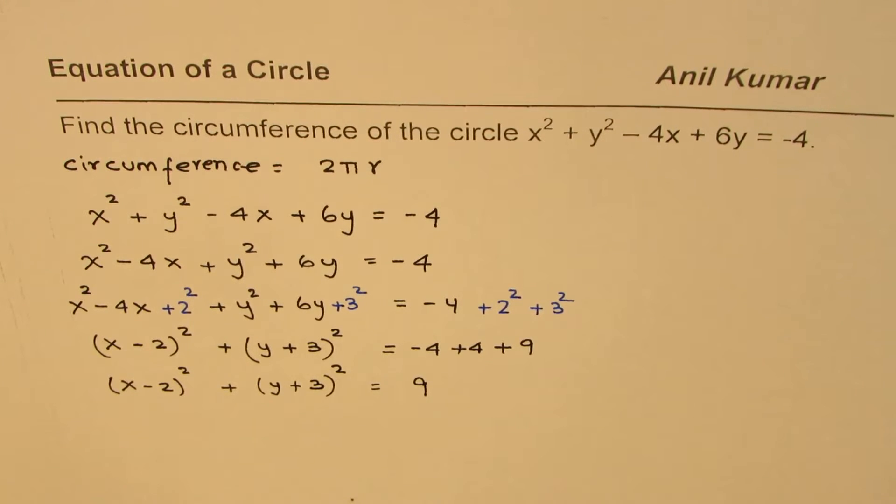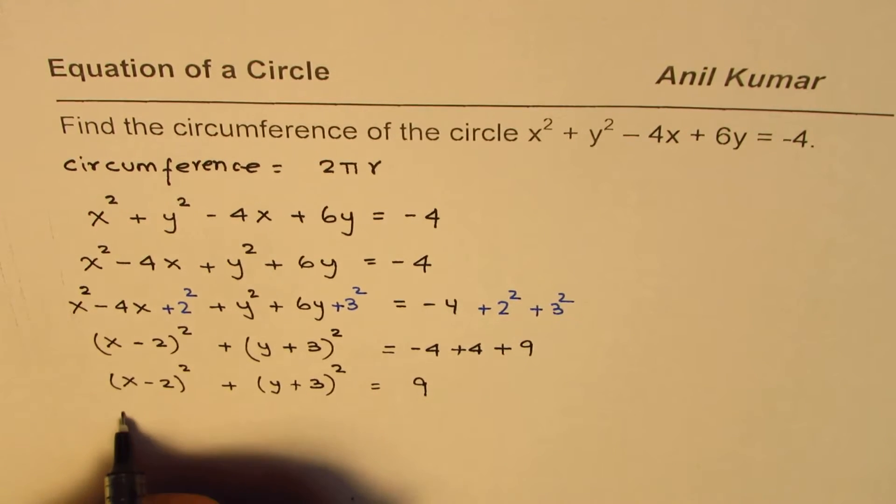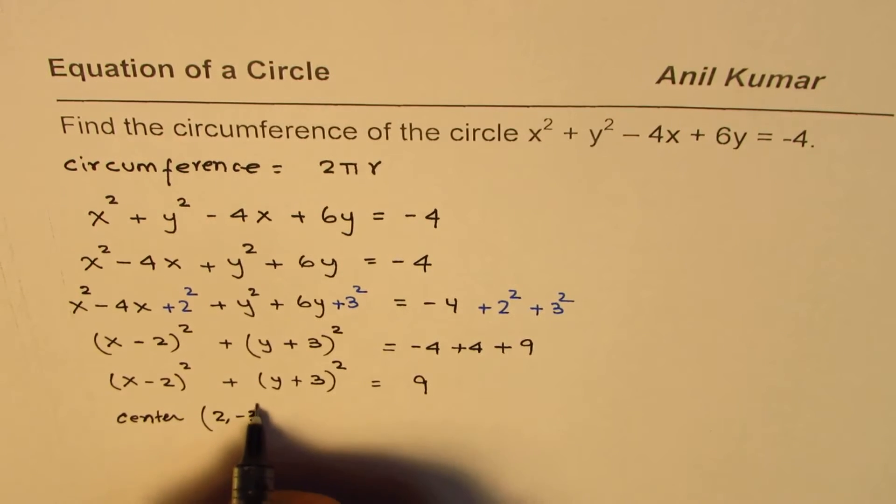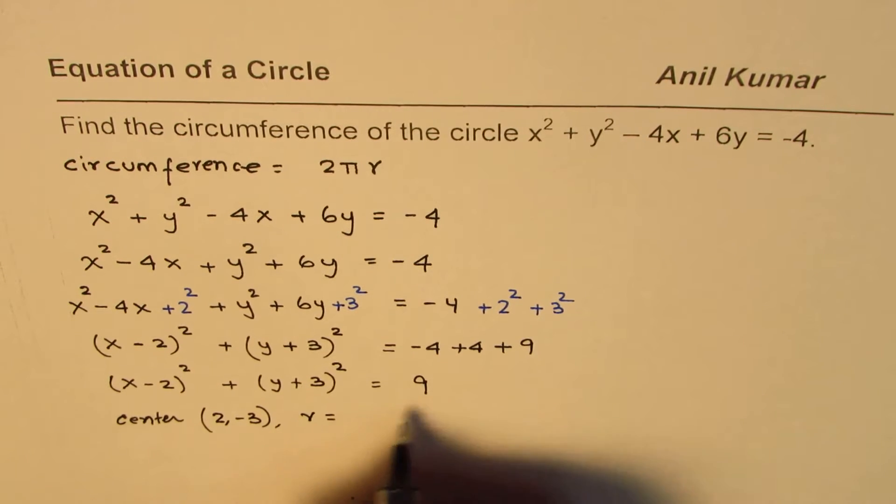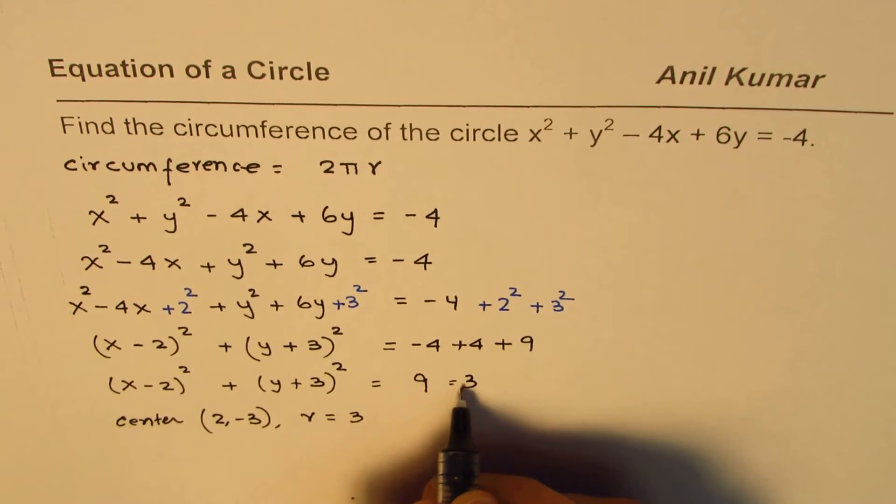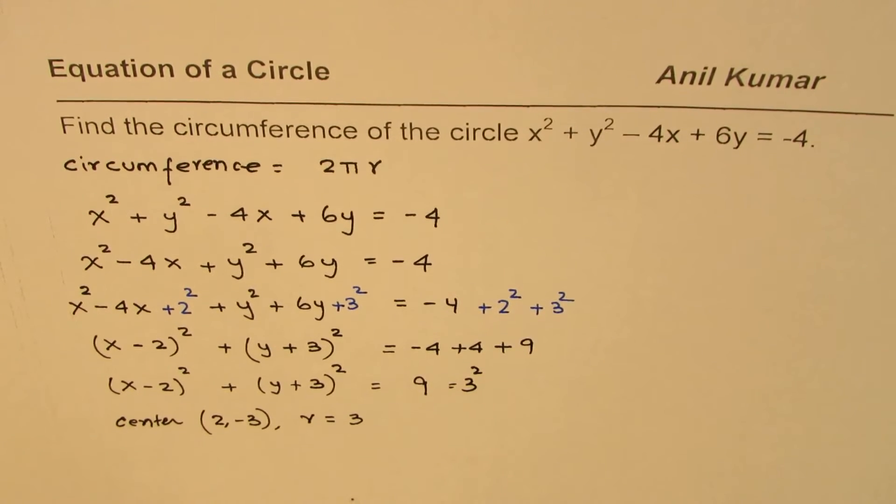So from this equation you can easily read the center. So the equation has a circle with center at 2 minus 3 and the radius r is equal to 3. So this 9 could be written as 3 square. So 3 is your radius.